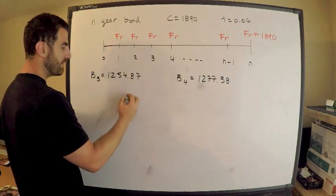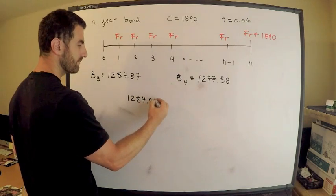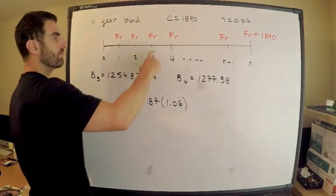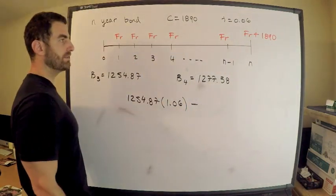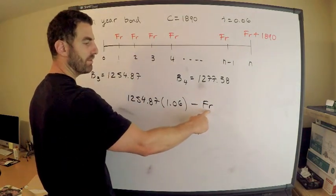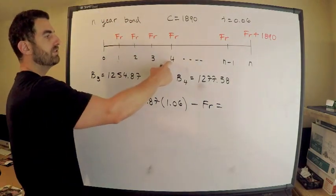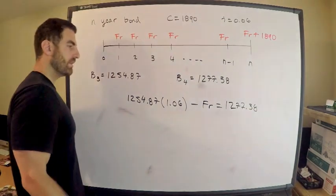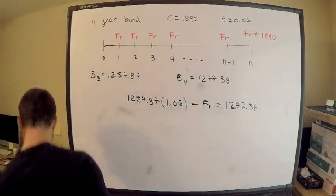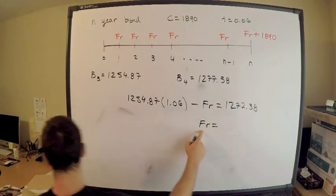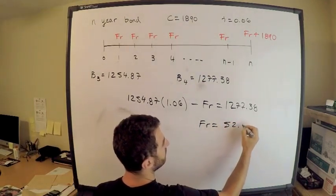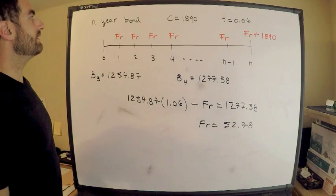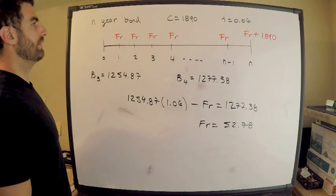In symbols: BV₃ × 1.06 − FR = BV₄, that is, 1254.87 × 1.06 − FR = 1277.38. Solving for FR gives us the coupon value FR = 52.78. So literally these are the coupons paid — face value times coupon rate.